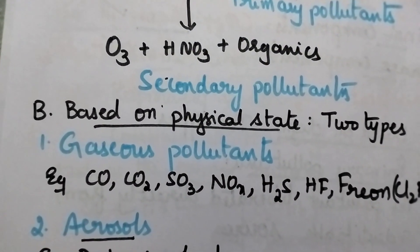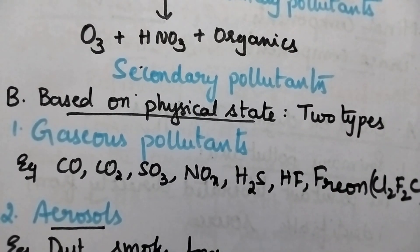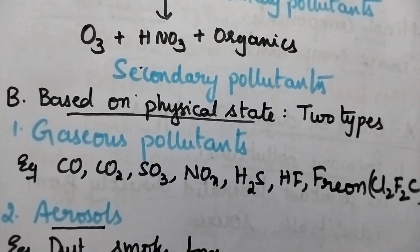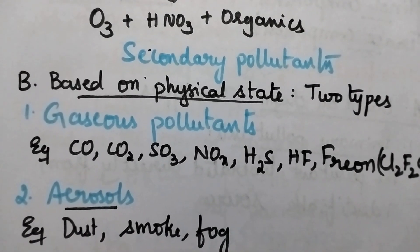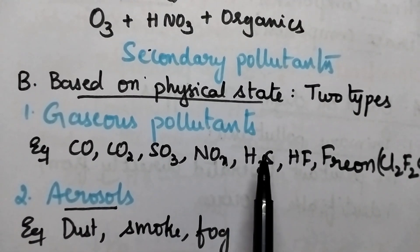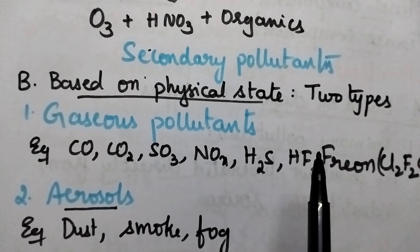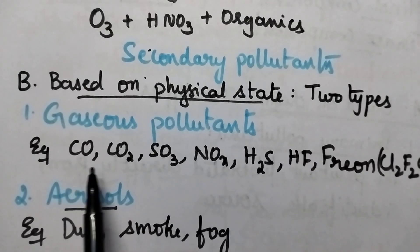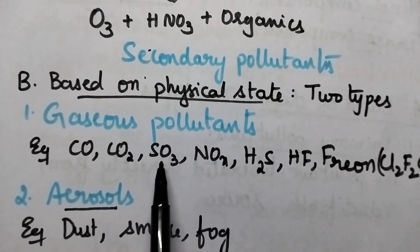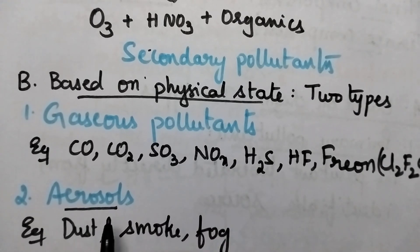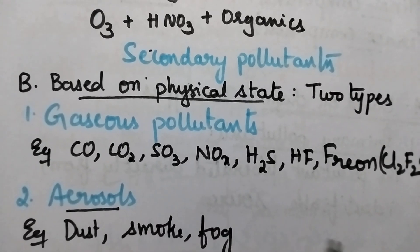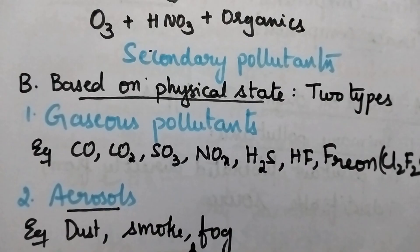Based on physical state, air pollutants can be classified into two types: gaseous pollutants and aerosols. Gaseous pollutants are present in the gaseous state and include carbon monoxide, carbon dioxide, oxides of sulfur, oxides of nitrogen, H2S and freon. Aerosols are the dispersion of solid and liquid fine droplets in the air, including dust, smoke and fog.